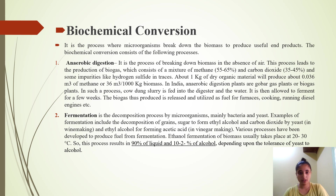Next, biochemical conversion — a process where microorganisms break down biomass to produce useful end products. The biochemical conversion consists of the following processes. Anaerobic digestion is a process of breaking down biomass in the absence of air. This process leads to the production of biogas, which consists of a mixture of methane (55 to 65 percent) and carbon dioxide (35 to 45 percent), along with some impurities like hydrogen sulfide.